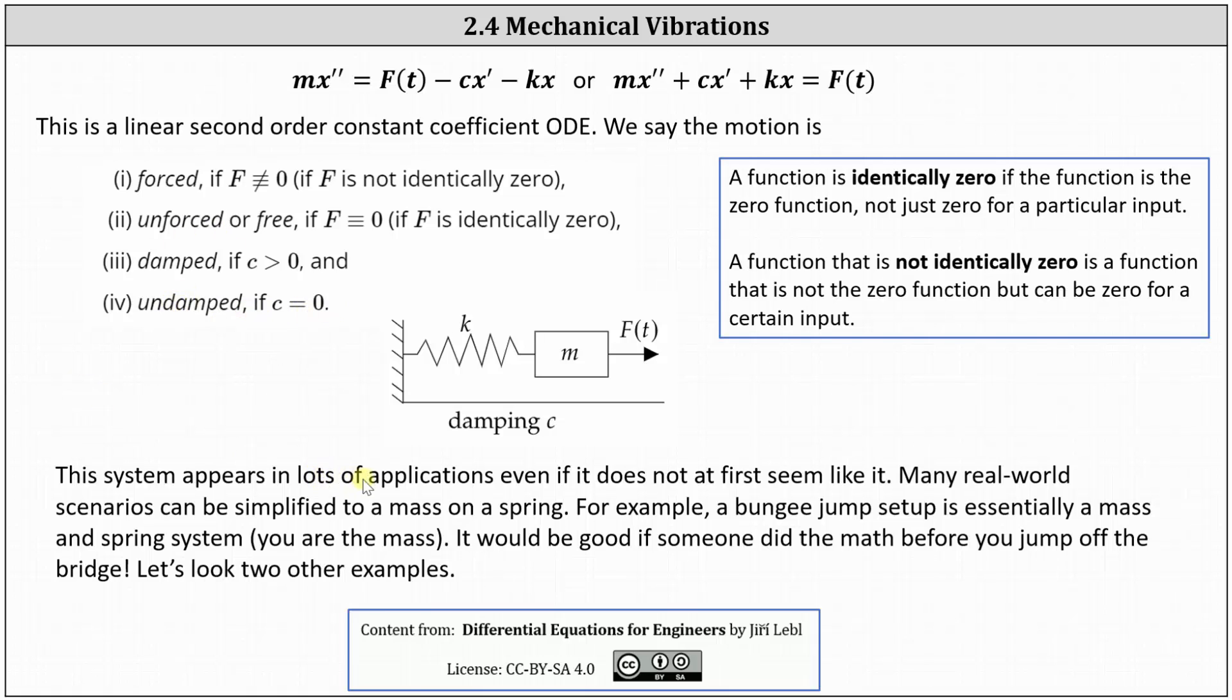This system appears in lots of applications, even if it does not at first seem like it. Many real world scenarios can be simplified to a mass on a spring. For example, a bungee jump setup is essentially a mass and spring system where you are the mass, and it would be good if someone did the math before you jump off the bridge. Let's look at two more examples.